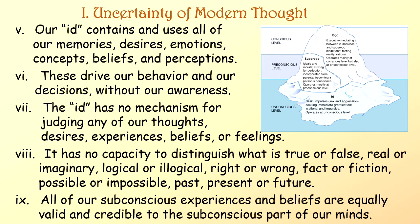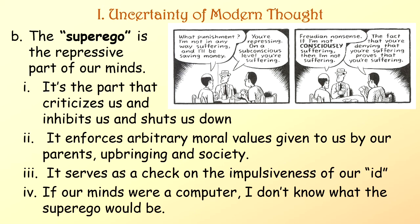The interesting thing about the id is that it has no mechanism for judging any of our thoughts, desires, experiences, beliefs, or feelings. So it has no capacity to distinguish what is true or false, real or imaginary, logical or illogical, right or wrong, fact or fiction, possible or impossible, past, present, or future. All of our subconscious experiences and beliefs are equally valid and credible to the subconscious part of our minds. Second, the super ego — this is the repressive part of our minds. It's the part that criticizes us, inhibits us, and shuts us down. It enforces arbitrary moral values given to us by our parents, upbringing, and society, and serves as a check on the impulsiveness of our id.